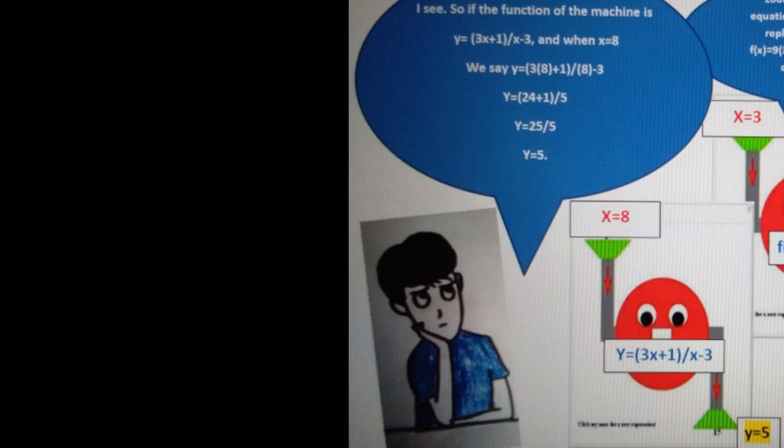I see. So if the function of the machine is y equals 3x plus 1, quantity divided by x minus 3, and when x is equal to 8, we say y is equal to 3 times 8 plus 1, quantity divided by 8 minus 3. So y equals 24 plus 1 quantity divided by 5. Y equals 25 divided by 5. Therefore, y is equal to 5.